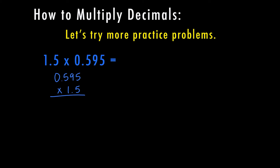Let's go ahead and check your work. Starting with the 5: 5 times 5 is 25. 5 times 9 is 45, plus 2 is 47. 5 times 5 is 25, plus 4 is 29. 5 times 0 is 0 — now I'm done with the 5. I'm going to put a placeholder here and multiply by 1: so that gives me 5, 9, 5. Adding them up, I get 8,925.